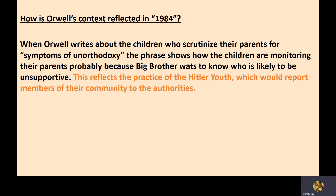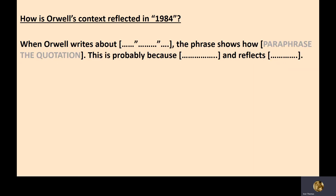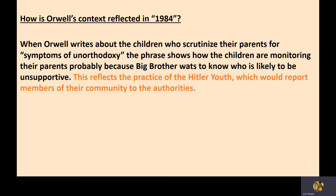How is Orwell's context reflected in 1984? Context means what was going on in England or the world in Orwell's life and times. Here's an example frame: when Orwell writes about 'the children who scrutinize their parents for symptoms of unorthodoxy', the phrase shows how the children are monitoring their parents, probably because Big Brother wants to know who is likely to be unsupportive.